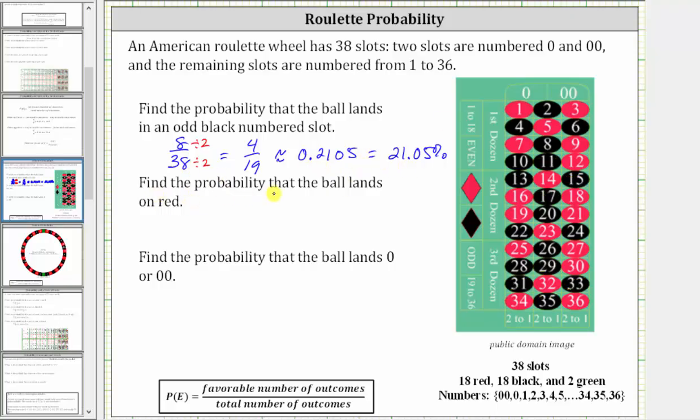Next we're asked to find the probability that the ball lands on red. 18 slots are red out of the 38 slots, and therefore the probability the ball lands on red is 18/38ths. Again, simplifying, we have 9/19ths. Again, this is the exact probability the ball lands on red.